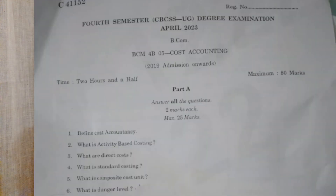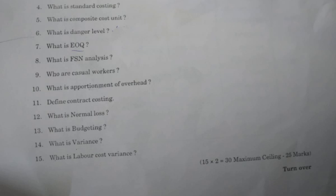Let's go to my own custom paper. Part A: define cost accountancy — easy. Then activity based costing — easy. What are direct costs — basic question. Standard costing, composite cost unit, danger level — easy. EOQ — easy. FSN analysis, who are casual workers, then apportionment of overhead, contract costing, define normal loss — easy. Budgeting, variance, labor cost.